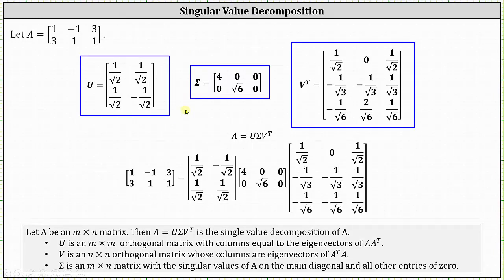In our previous lesson, we found the singular value decomposition of matrix A, which is shown below, where matrix U is the first matrix, matrix sigma is the second matrix, and matrix V transpose is the third matrix. We will now use matrix U and matrix V transpose to find the four fundamental subspaces of matrix A.